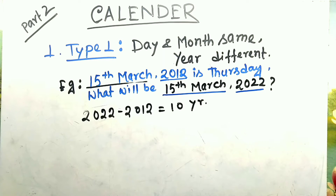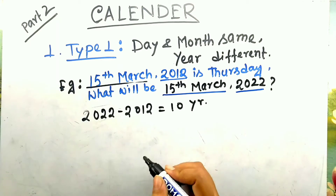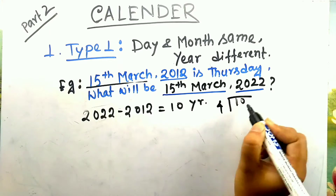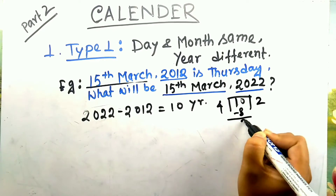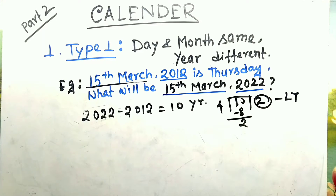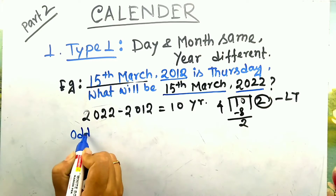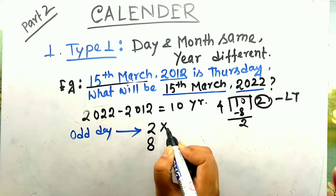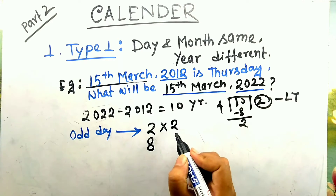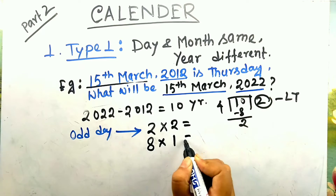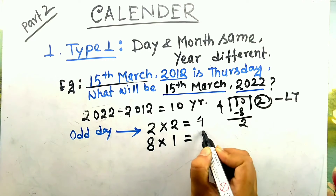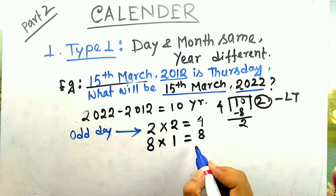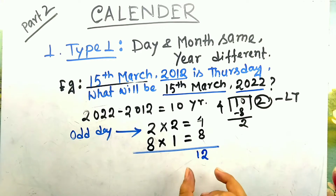In those 10 years, some will be normal years and some will be leap years. To calculate: divide 10 by 4. You get quotient 2 and remainder 2. That quotient is your number of leap years — so 2 leap years and 8 general years. Each leap year has 2 odd days and each general year has 1 odd day, so total odd days = (2×2) + (8×1) = 4 + 8 = 12.